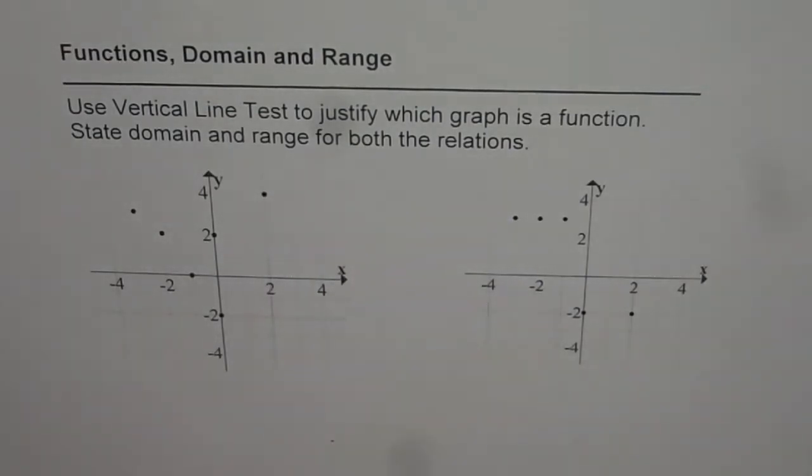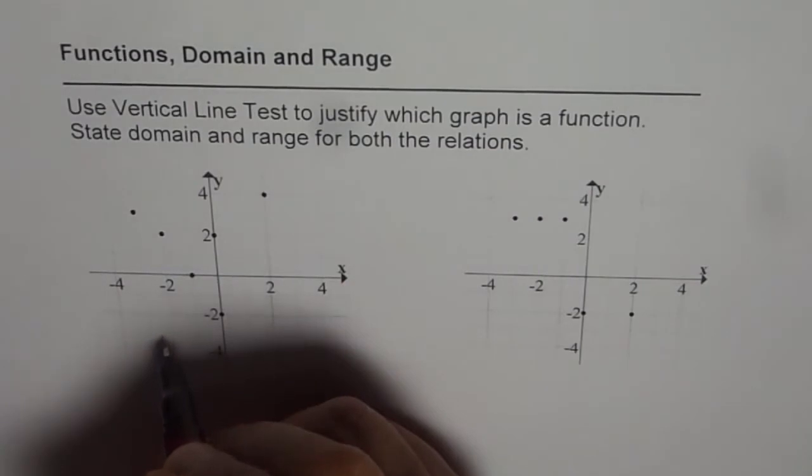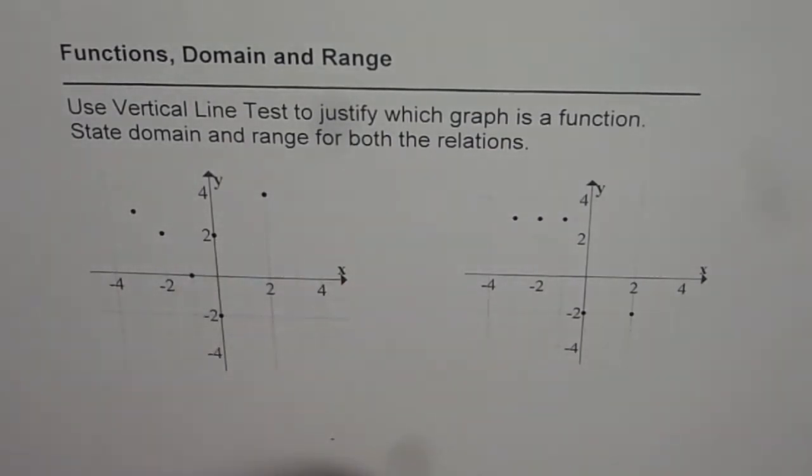So we are given two relations here and we need to figure out whether they are functions or not. Vertical line test helps us to figure it out. It means if you draw a vertical line and it intersects at two places, then it is not a function.